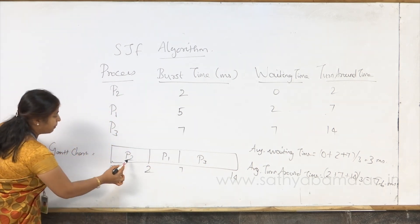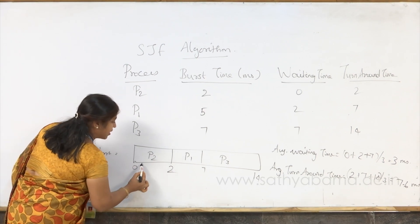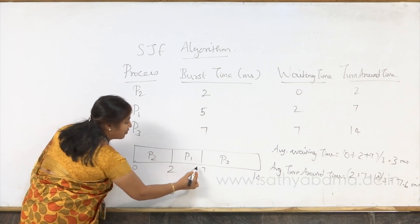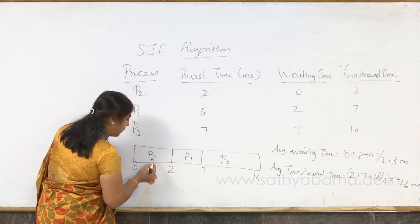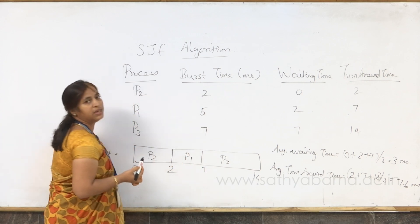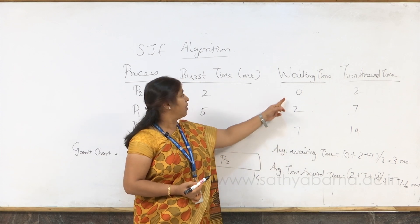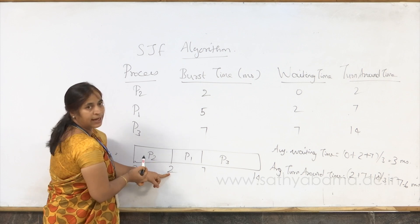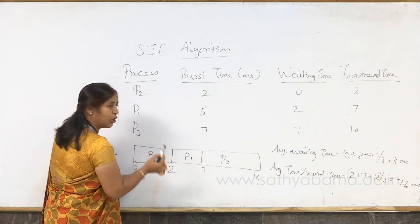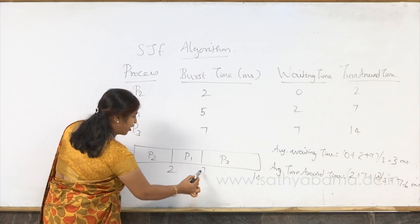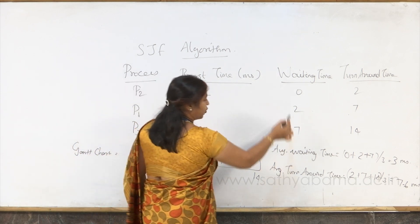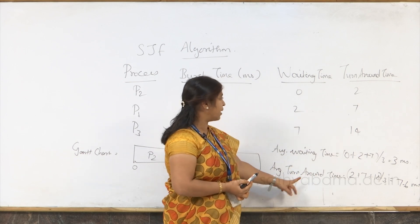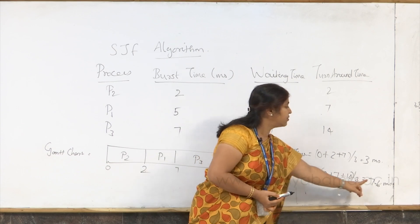In the Gantt chart, P2 starts at 0 milliseconds and completes at 2 milliseconds. Then P1 gets the CPU at 2 milliseconds and uses it for 5 milliseconds. P3 waits for both P2 and P1 to finish — that is 7 milliseconds. So P2's waiting time is 0, P1's waiting time is 2 milliseconds, and P3's waiting time is 7 milliseconds. Average waiting time is 0 plus 2 plus 7 divided by 3, equal to 3 milliseconds. Average turnaround time is approximately 7.6 milliseconds.